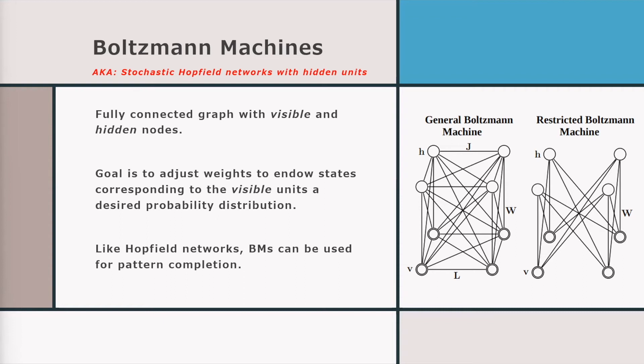Like Hopfield networks, Boltzmann machines can also be used for pattern completion. A common example is movie reviews — imagine a thousand movies and you ask people if they've seen each one and whether they liked it. If they haven't seen a movie, that's no information, like a missing spin. The reason you want a Boltzmann machine over a Hopfield network for this task is because it learns the probability distribution and the correlations between those movies — something you can't do with a Hopfield network alone.